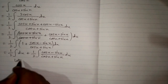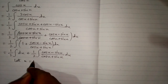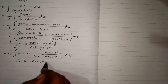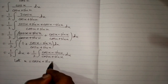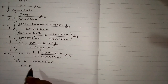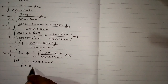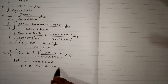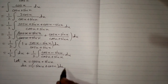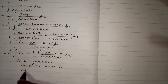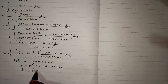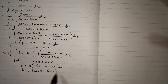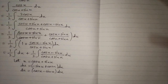Now let u equal cos(x) plus sin(x). Then the differential du equals the derivative of cos(x) plus sin(x) multiplied by dx. The derivative of cos(x) is minus sin(x) and the derivative of sin(x) is cos(x), so du equals cos(x) minus sin(x) multiplied by dx.